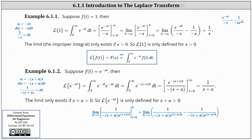Because the upper limit of integration is infinity, we write this as a limit. I also moved e to the power of negative the quantity s plus a times t down to the denominator to make it easier to determine the limit. As h approaches infinity, this first fraction approaches zero, leaving us with zero minus one divided by negative the quantity s plus a, which simplifies to one divided by the quantity s plus a — the Laplace transform of f of t equals e to the power of negative at. The limit only exists if s plus a is greater than zero, so this Laplace transform is only defined for s plus a greater than zero.